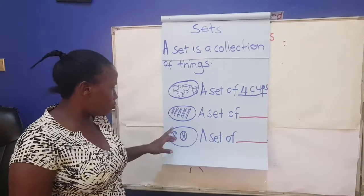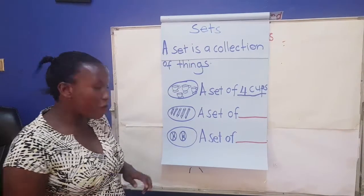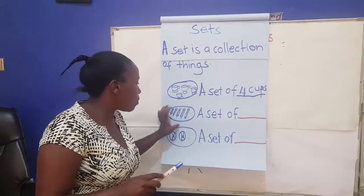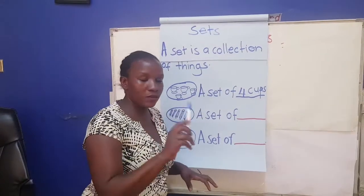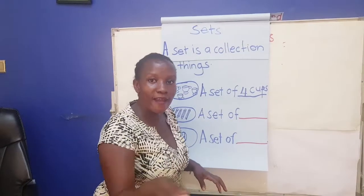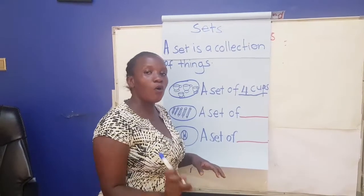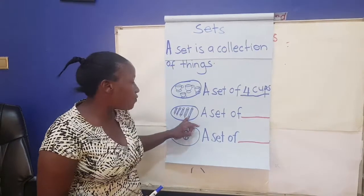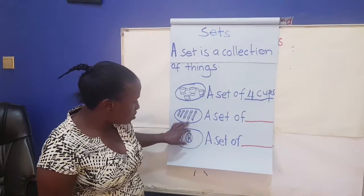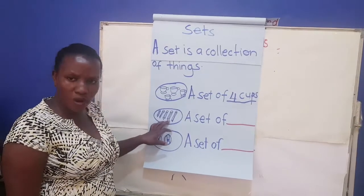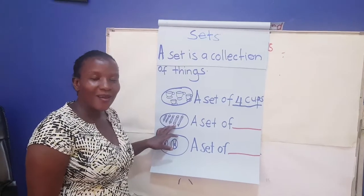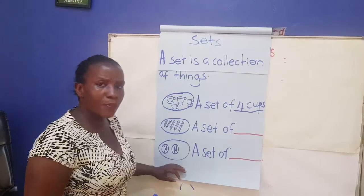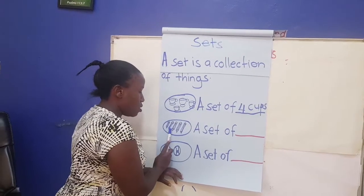Who can tell me what these are? Remember we learned about the singular and plural — when we have many things and it's no longer one, we add 's' or 'es' where necessary. These good-looking things are pencils!